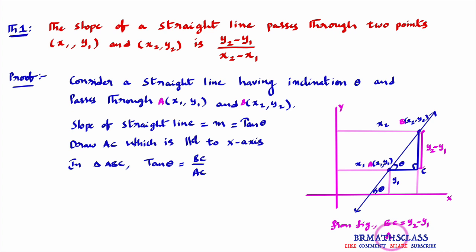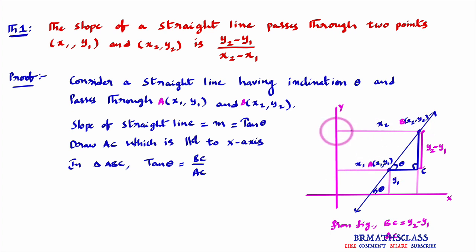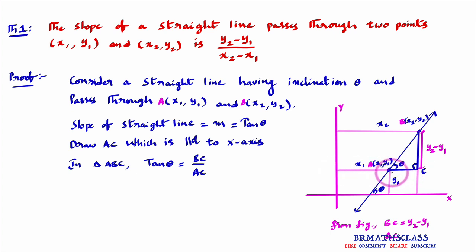Now I want AC from the diagram. This length AC: the distance to point A from the origin along the x-axis is x1, and the full length to point B is x2. Since AC equals the full length minus x1, AC is x2 minus x1.